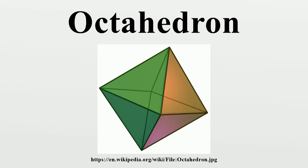It is also a triangular antiprism in any of four orientations. An octahedron is the three-dimensional case of the more general concept of a cross-polytope. A regular octahedron is a three-ball in the Manhattan metric.